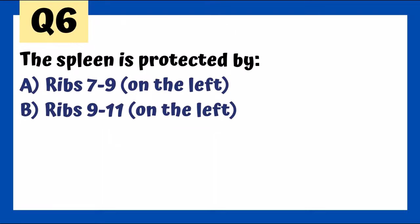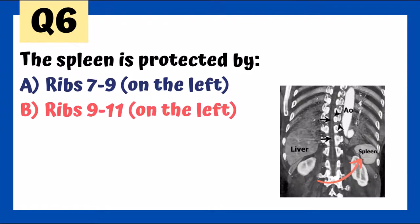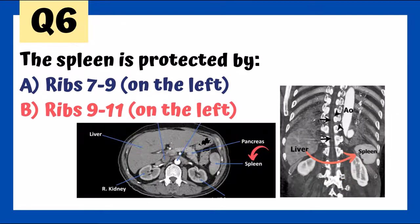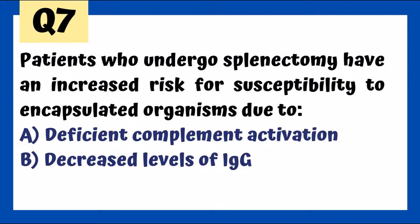Patients who undergo splenectomy have increased risk for susceptibility to encapsulated organisms due to deficient complement activation. People without a spleen have significantly lower levels of IgM, which is important for complement activation. Without complement activation, there's increased risk of susceptibility to encapsulated organisms — most notably Neisseria and Strep pneumoniae.